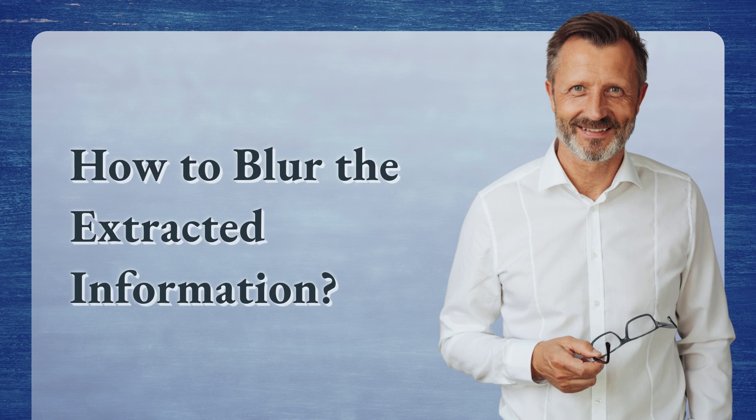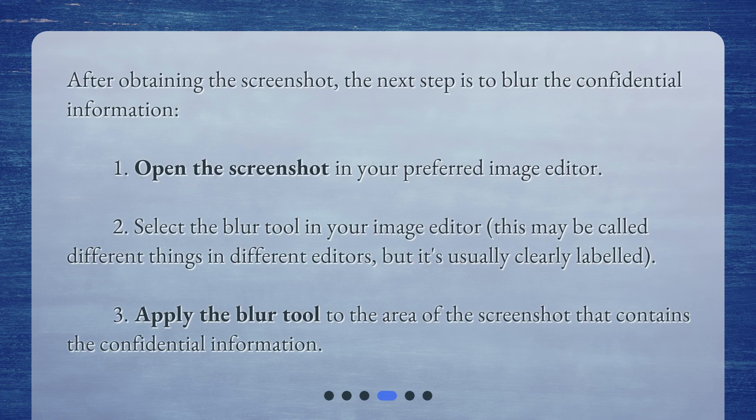How to blur the extracted information: After obtaining the screenshot, the next step is to blur the confidential information. Open the screenshot in your preferred image editor. Select the Blur tool — this may be called different things in different editors, but it's usually clearly labeled. Apply the Blur tool to the area of the screenshot that contains the confidential information.